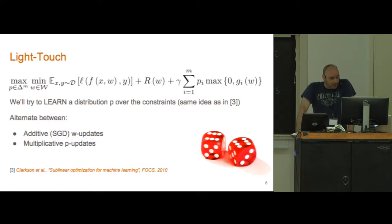Basically the idea is similar to what Clarkson et al used in their FOX 2010 paper, where we're going to take this maximization over the constraints, the search for the most violated constraint, and change it into maximization over a probability distribution.